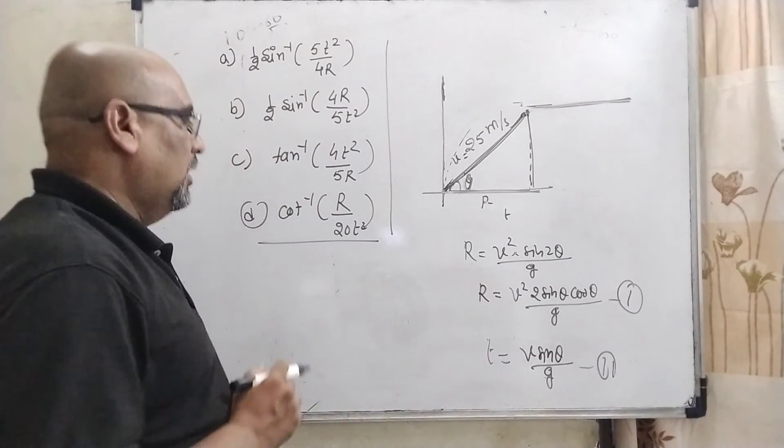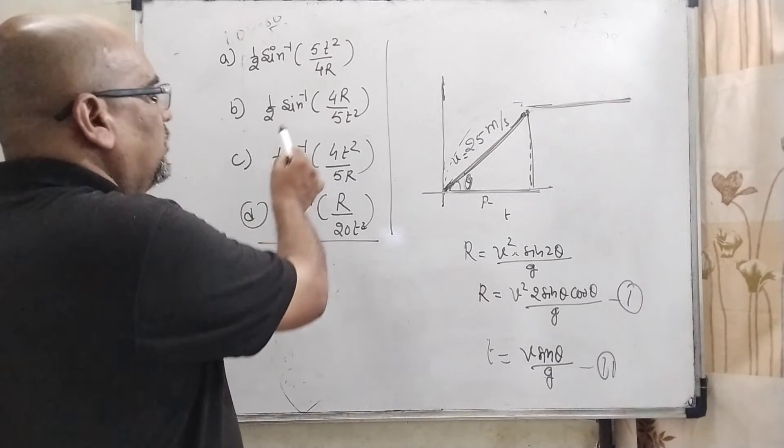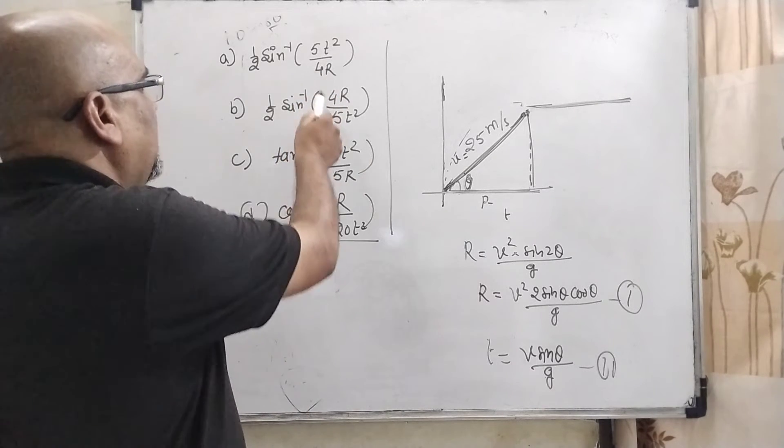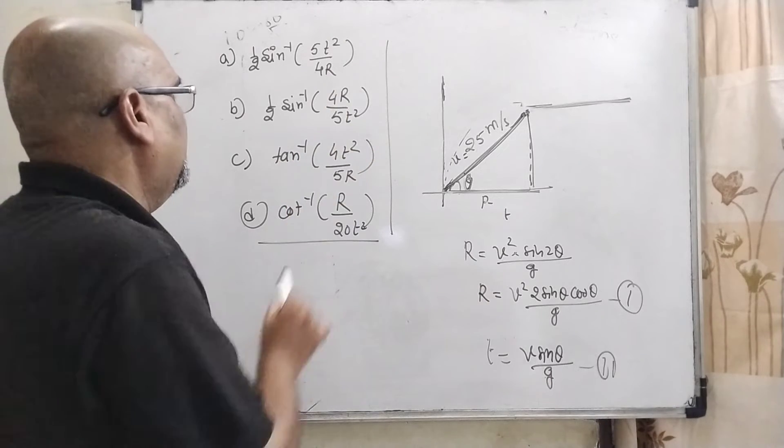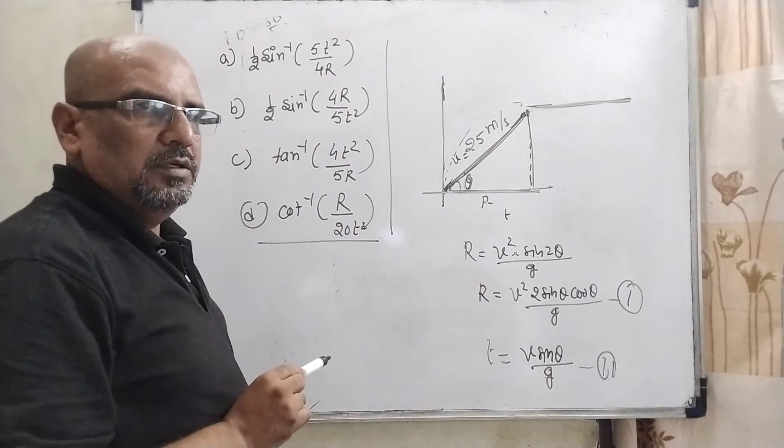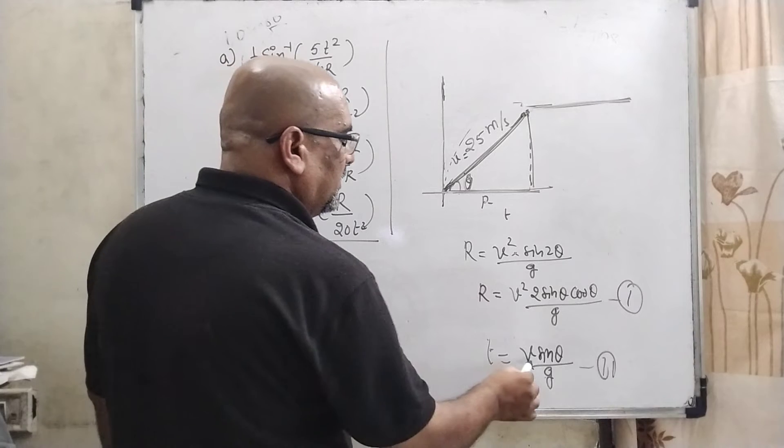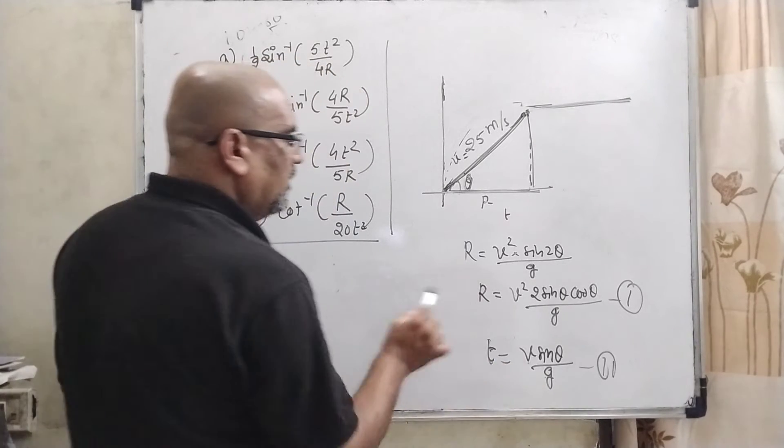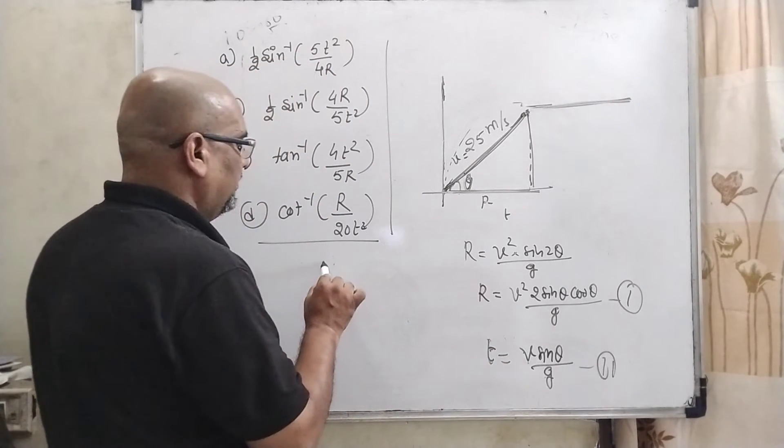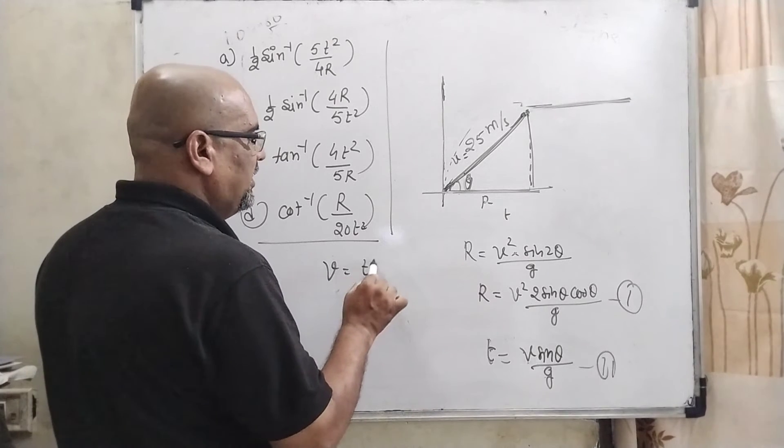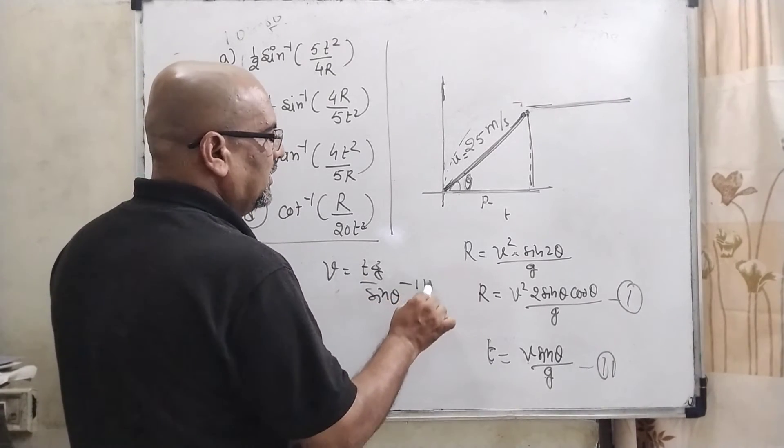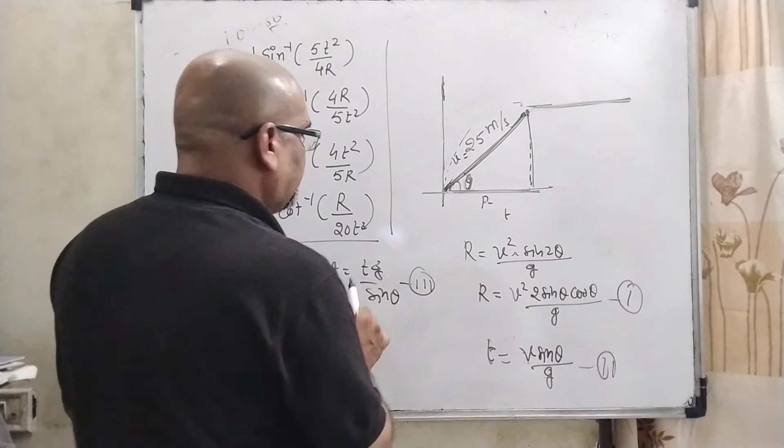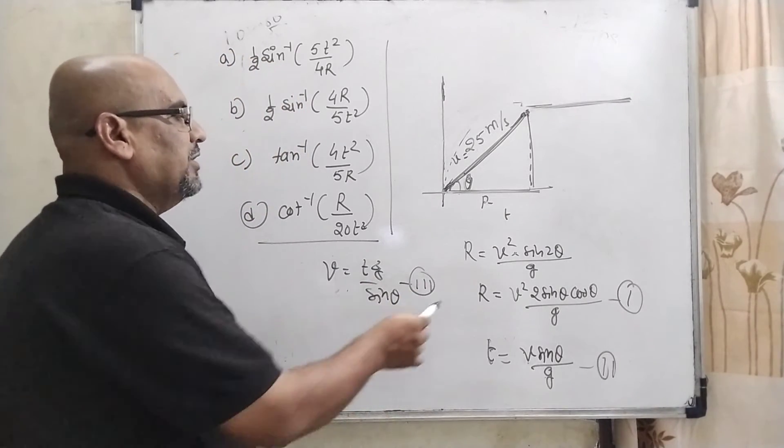Now again you can see that here all values have v, and our answers are in the form of t. So therefore we have to convert v into t form. That is, v can be written as tg / sin θ. That is the third equation, and now substitute this value in equation first.